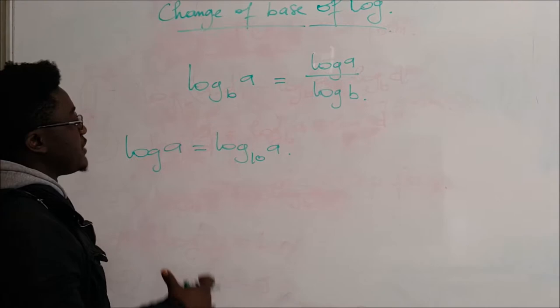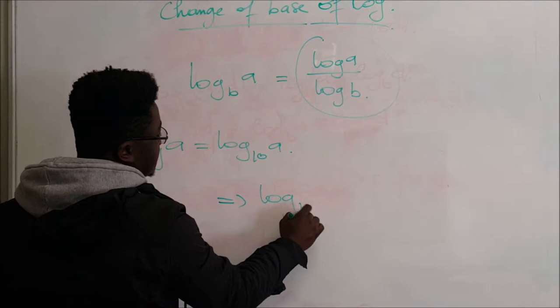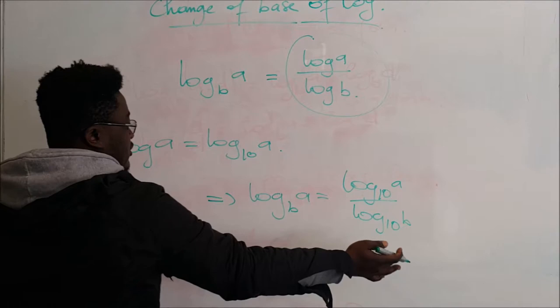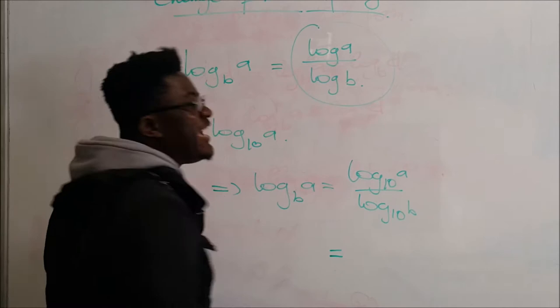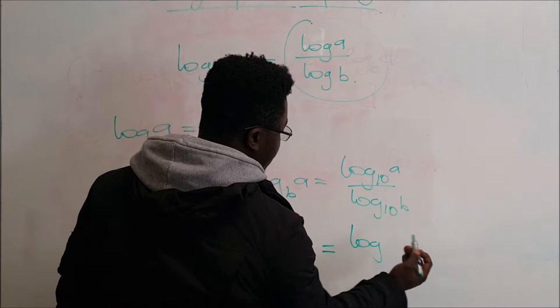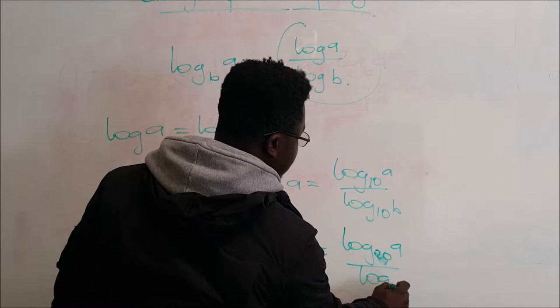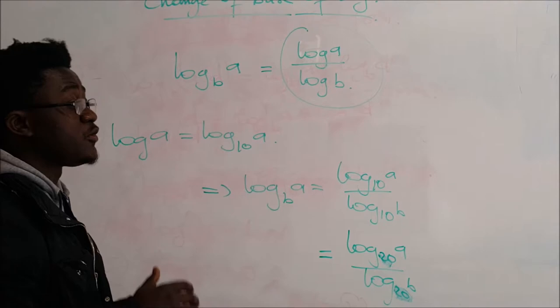So in this case, we know that this expression equals log base B of A, which is log base 10 of A over log base 10 of B. The base is the same on both numerator and denominator. And actually, we can change the base by any number. We could have written it with base 20 or any other number — it won't change the result of the log problem. That's what you must know about change of base.